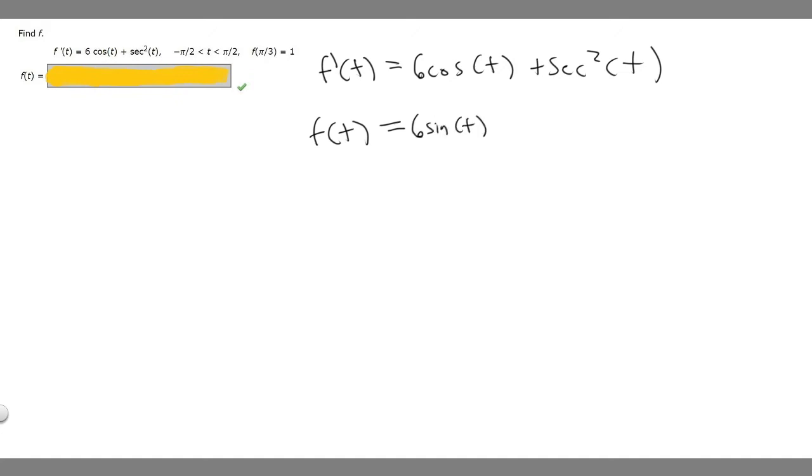And then we're told to find the antiderivative of secant squared of t. And if we recall that the derivative of tangent of a variable, in this case t, is equal to the secant squared of t. So if the derivative of tangent of t is equal to the secant squared of t, that means the antiderivative of secant squared of t is tangent of t.